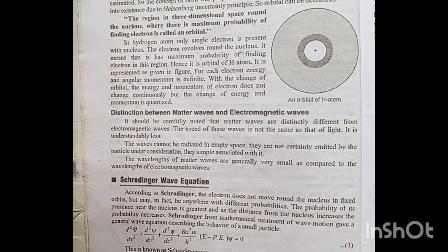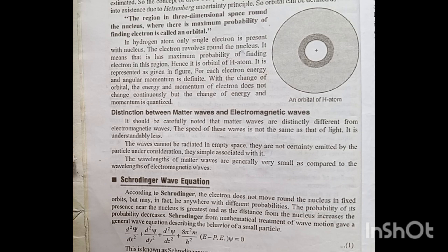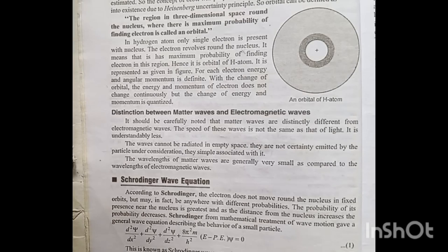For each electron, energy and angular momentum are definite. With a change of orbital, the energy and momentum of the electron do not change continuously — rather, the change of energy and momentum is quantized.